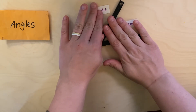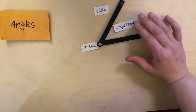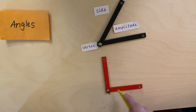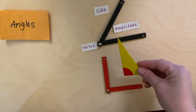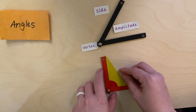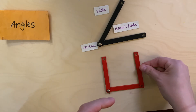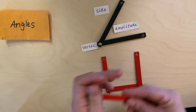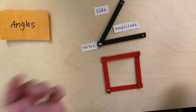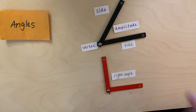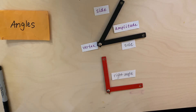Now let's look at the main types of angles. Here we have an angle that makes a perfect L. See this little guide? It fits perfectly in that corner. It's almost like if I took two more red sticks, I can make a square. An angle that makes a perfect L has a special name — it's called a right angle.